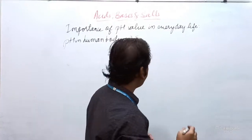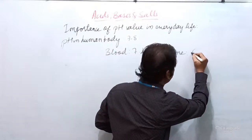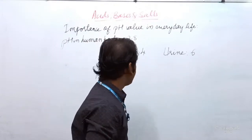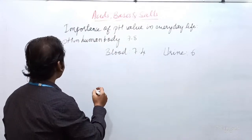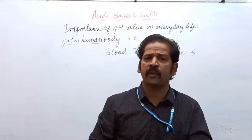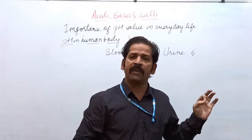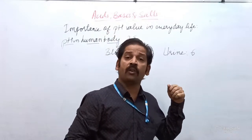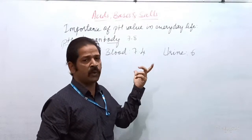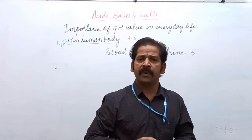Six liters of blood has a pH value of almost seven point four. And if you go through the pH value of urine, it is six. Both plants and animals have the same narrow range of seven to eight. Our body is very sensitive — more acidic or more basic conditions beyond this range create a problem for the body.